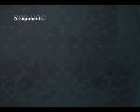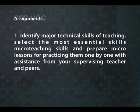These steps are repeated until the student teacher attains mastery in the use of the skill. Micro-teaching uses a single skill on one concept of content with a class of 5 to 10 pupils for practice in 5 to 10 minutes. After the acquisition of all the core skills, it is possible to integrate them for effective teaching in actual classroom situations. Now, try to do the following task: identify major technical skills of teaching, select the most essential micro-teaching skills, and prepare micro lessons for practicing them one by one with assistance from your supervising teacher and peers.